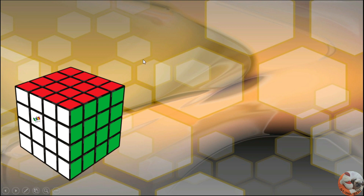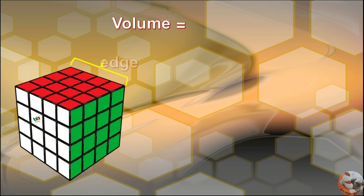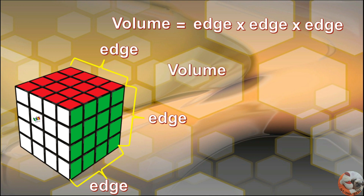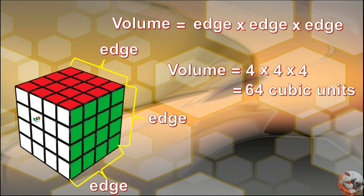How can you get the volume of this cube? If you count, it has 4 units on one edge. Since this is a cube, all edges are equal to 4. To get the volume, it is equal to edge multiplied by edge multiplied by edge. Each edge is 4 units, so the volume is equal to 4 times 4 times 4, which is equal to 64 cubic units.